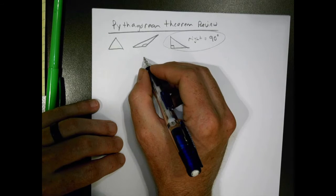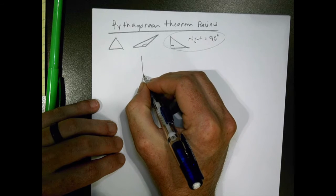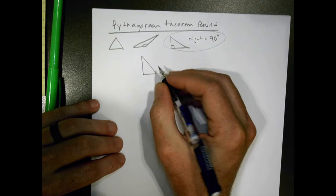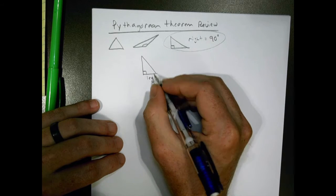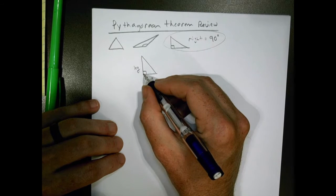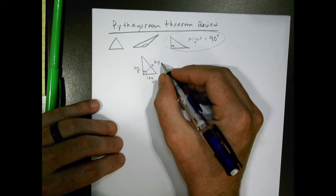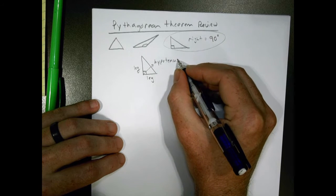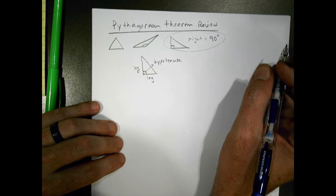So the Pythagorean Theorem says that when you have a right triangle, you have a couple of different parts. You have parts known as the legs — this is a leg right here, and this is a leg right here. The side directly across from the 90-degree angle is called the hypotenuse.